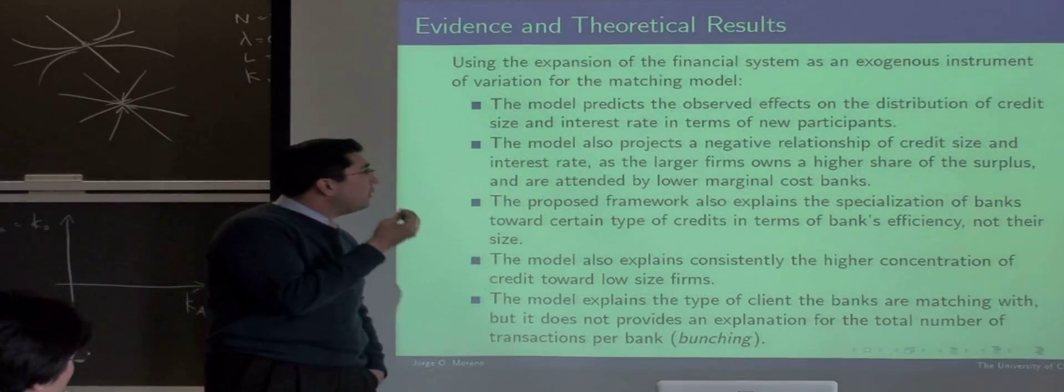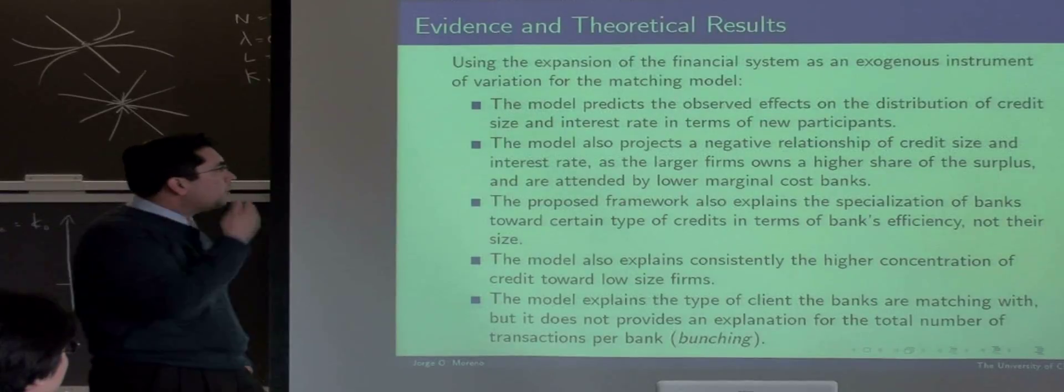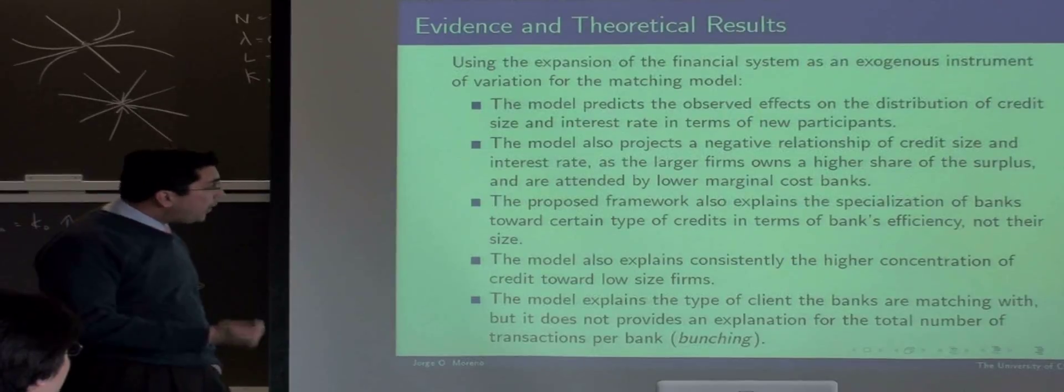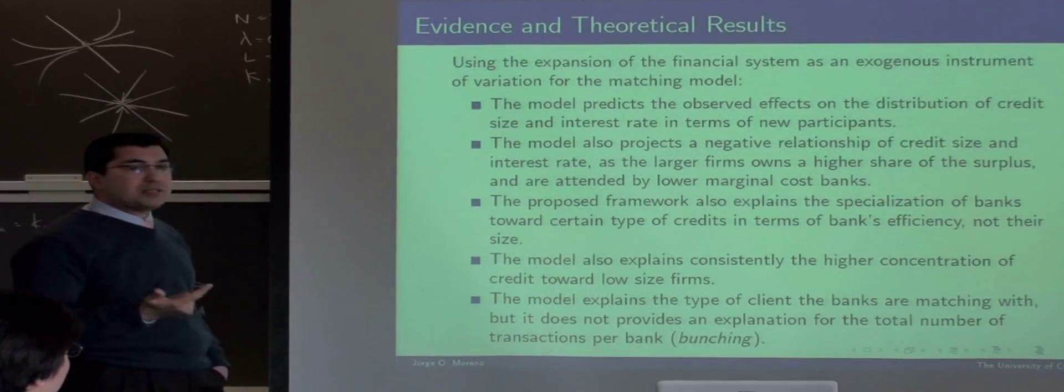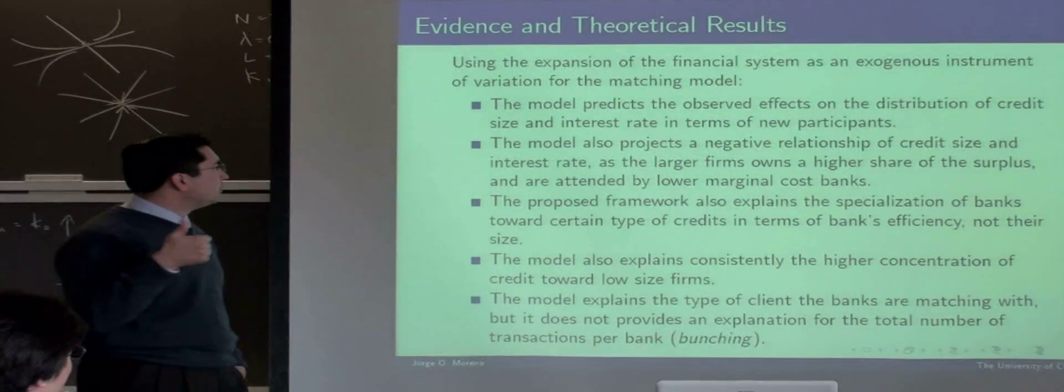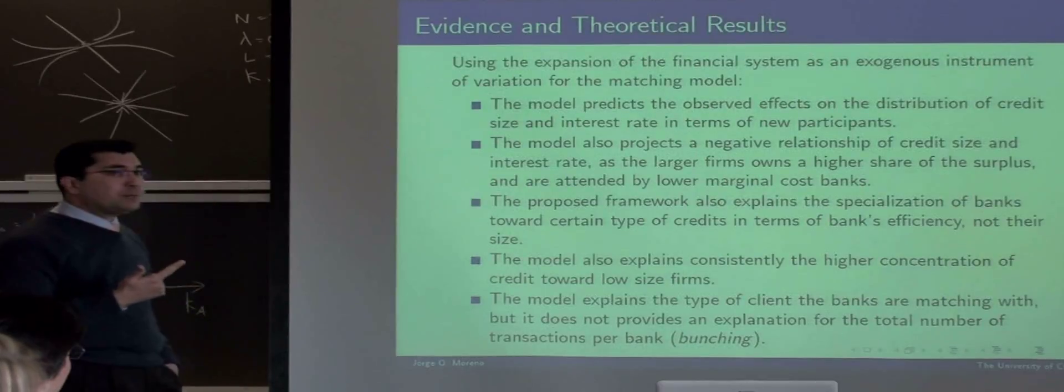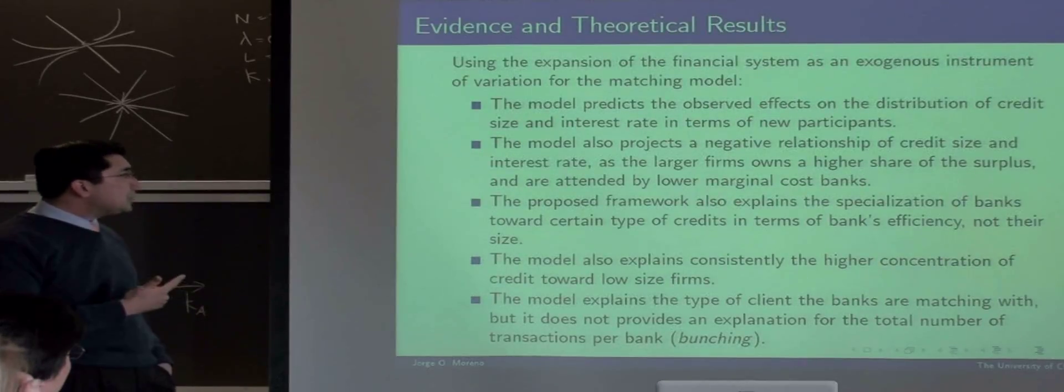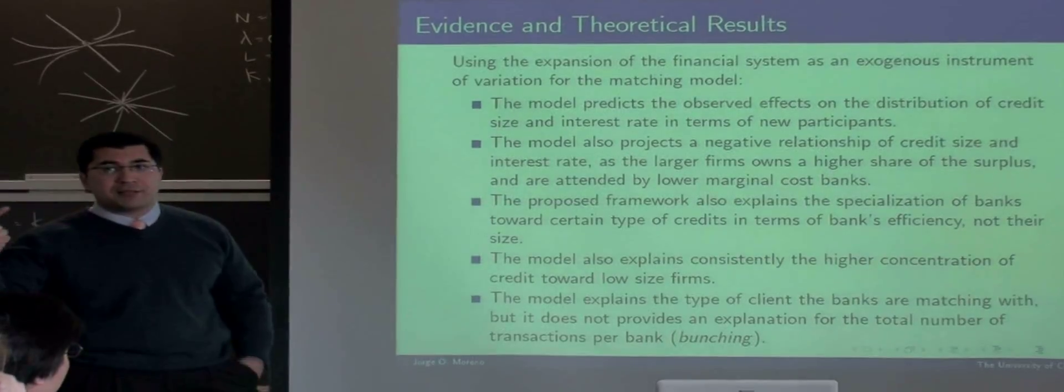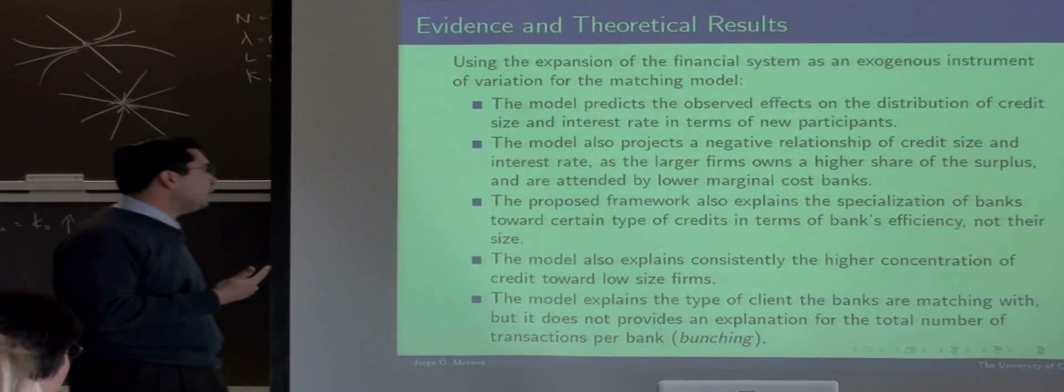Using the theoretical expansion of the financial system exogenous, as it is right now, with a very simple framework, the model indeed predicts the observed effects of the distribution of credit size and interest rate in terms of new participants. The model does well on that. The model also projects a negative relationship of credit size and interest rate. As the larger firms get credit from the best banks and are having a higher share of their profits or the surplus they're creating.